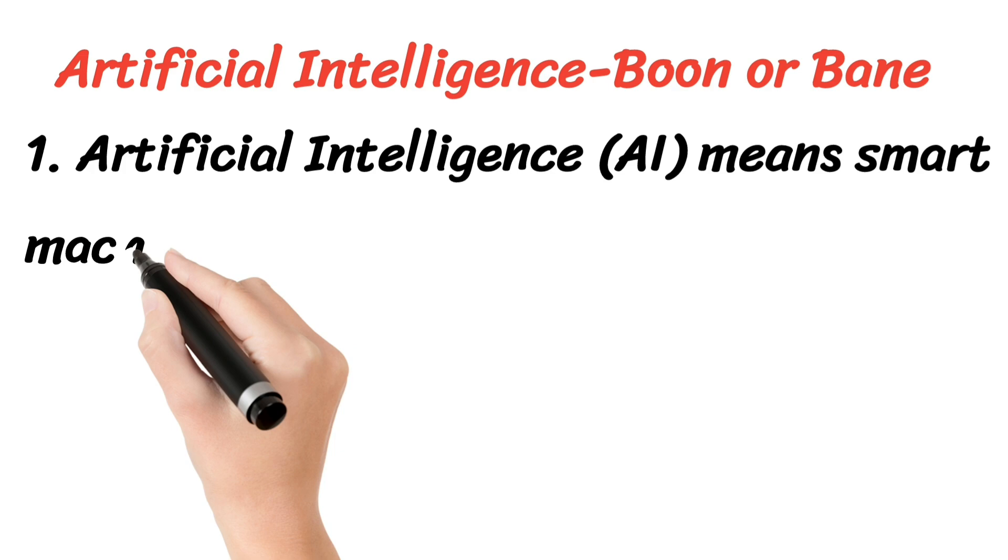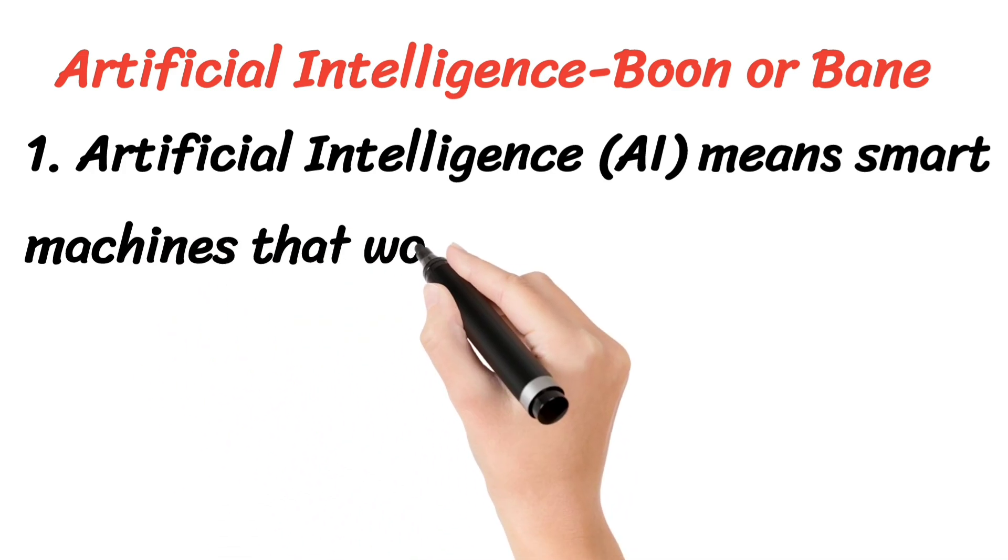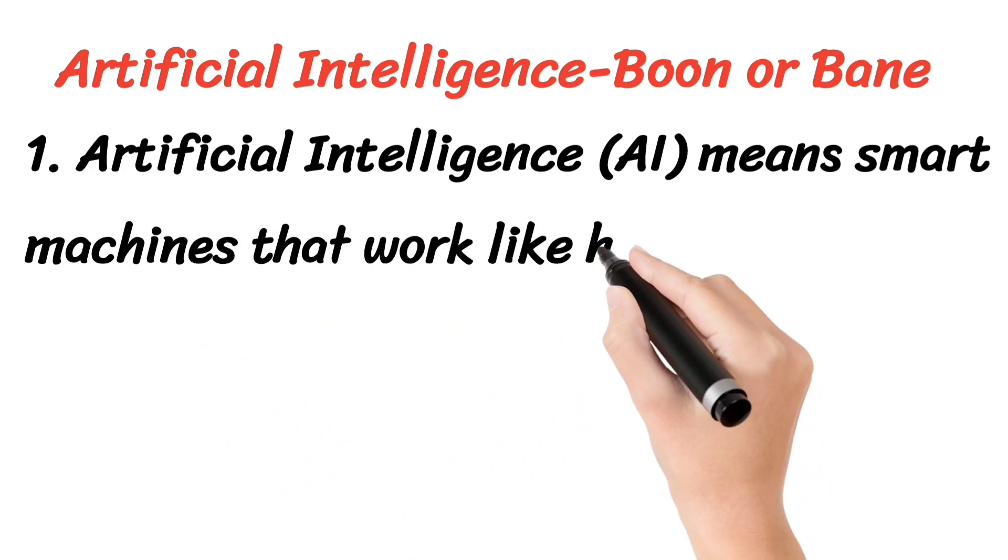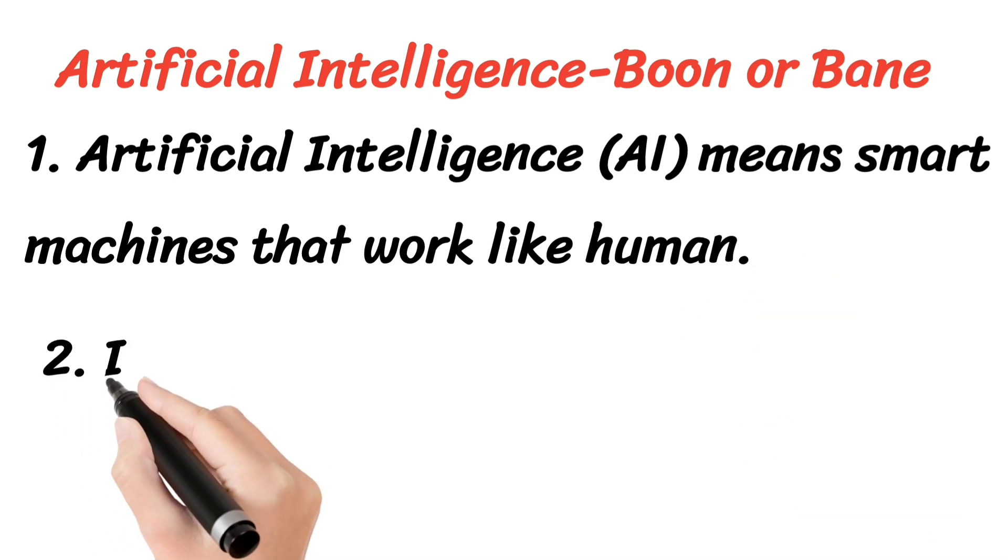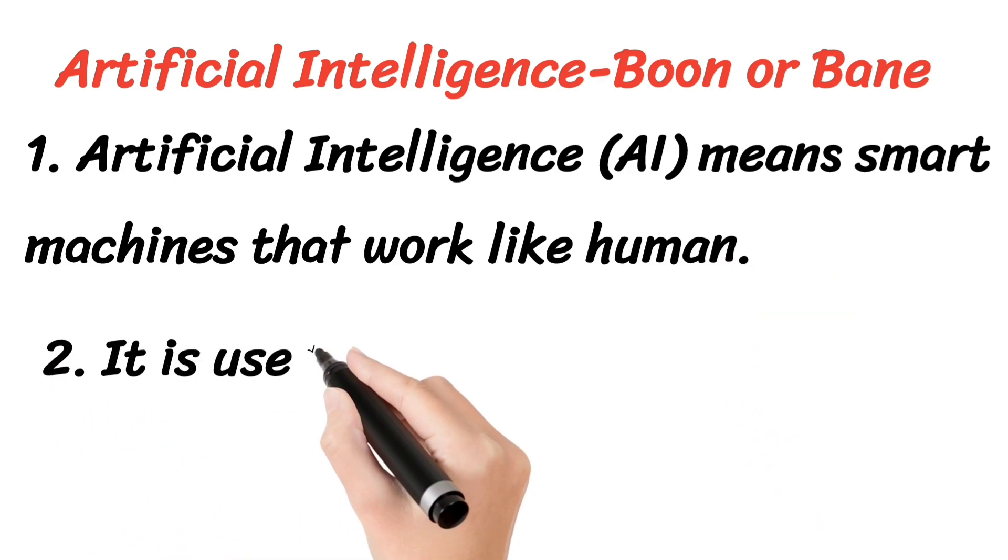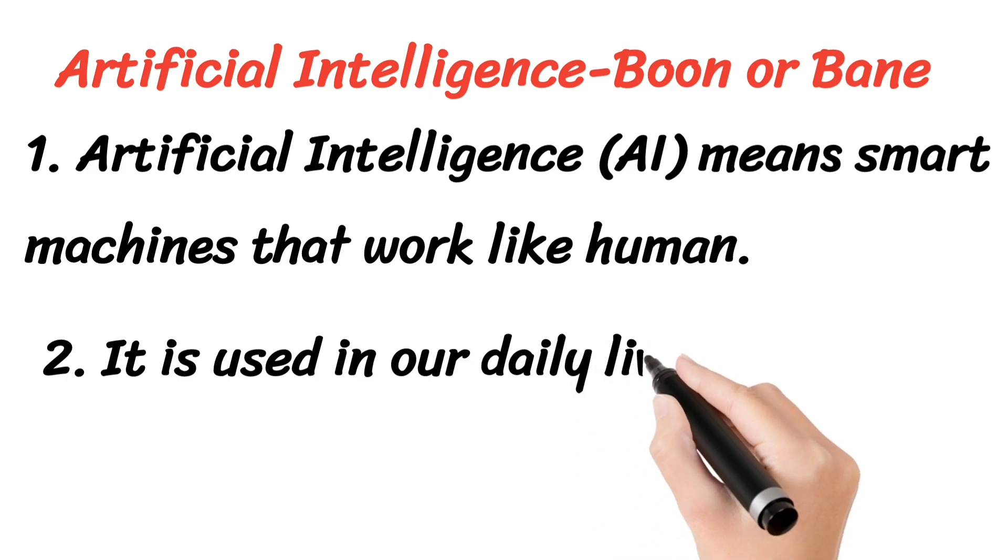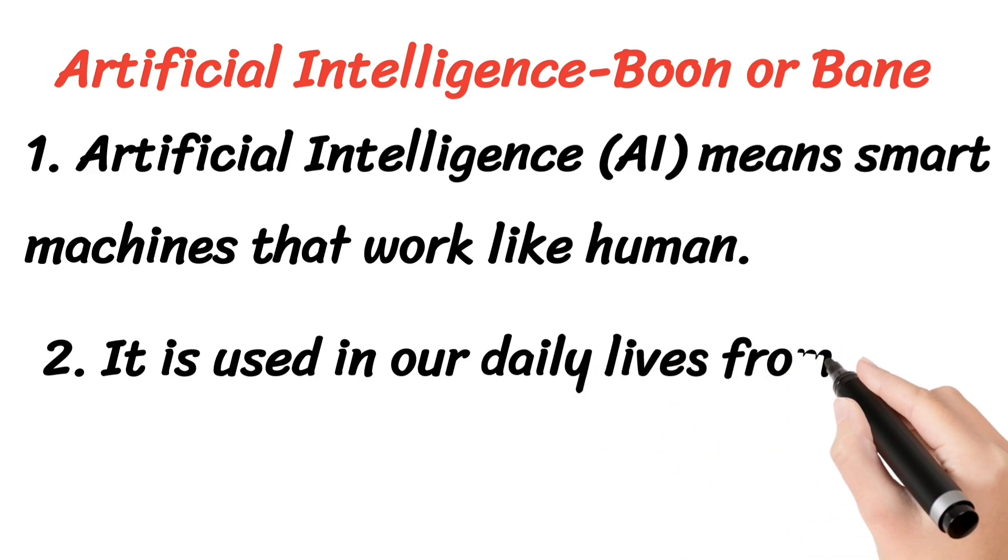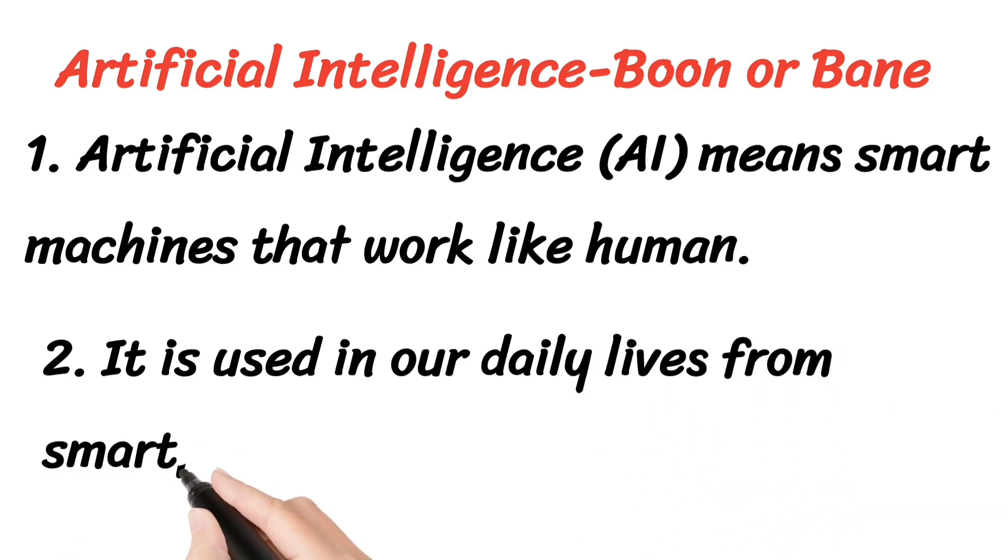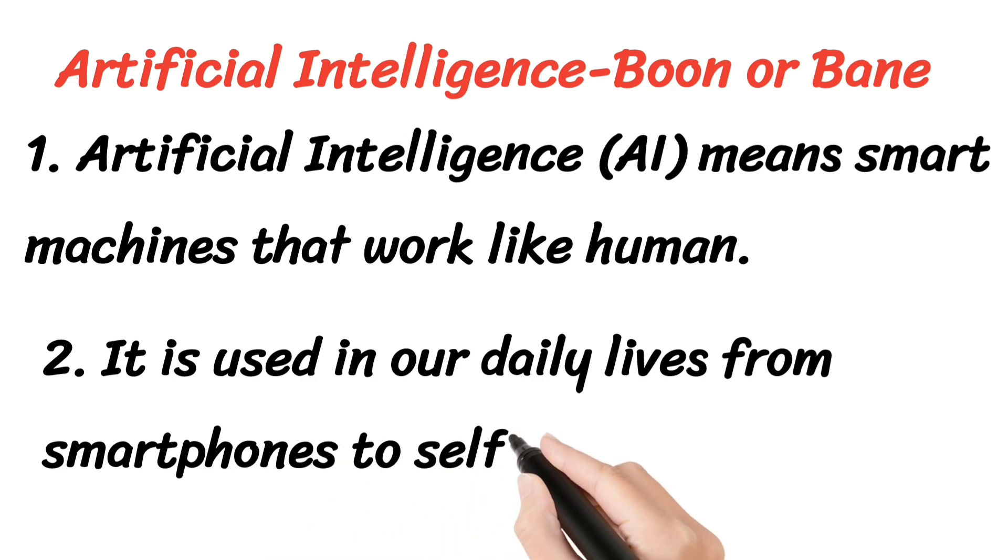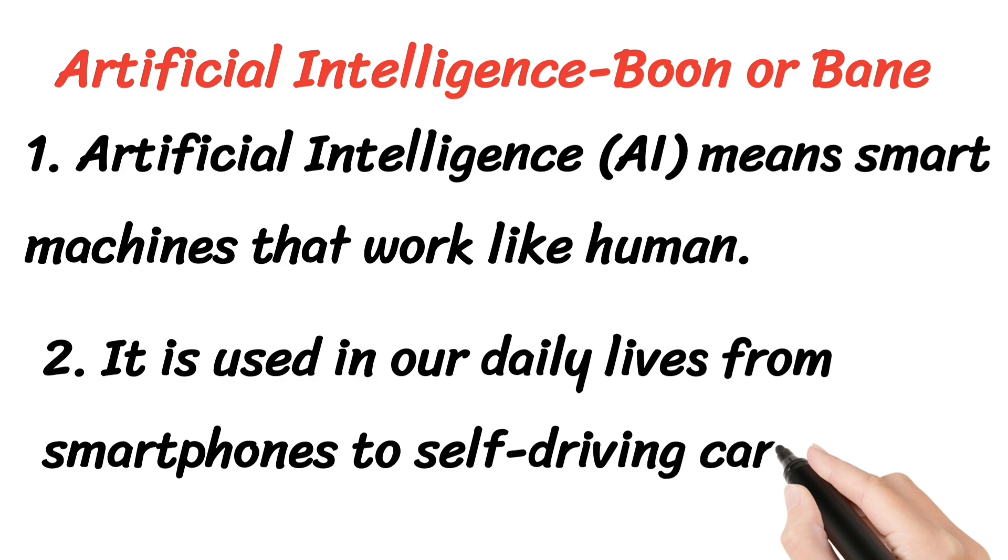First line: Artificial Intelligence means smart machines that work like humans. Second line: It is used in our daily lives, from smartphones to self-driving cars.